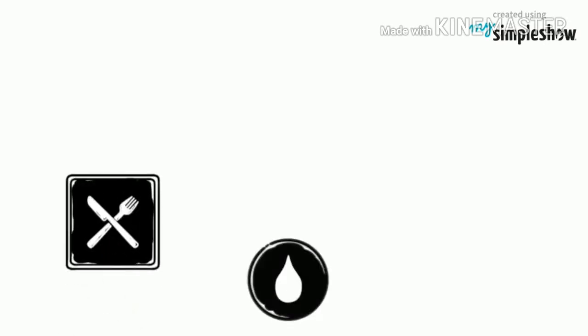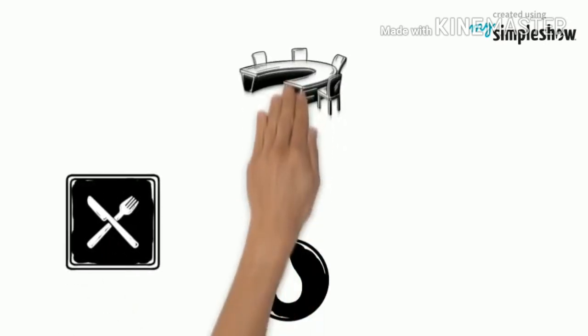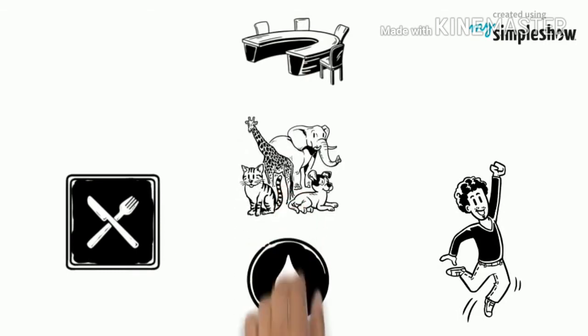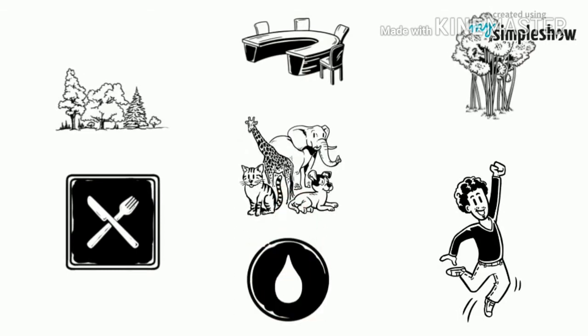Therefore, things like food, water, air, clothes, table, chair, human beings, animals, plants, trees, etc. are all examples of matter — meaning these all occupy space, have volume, and have mass.